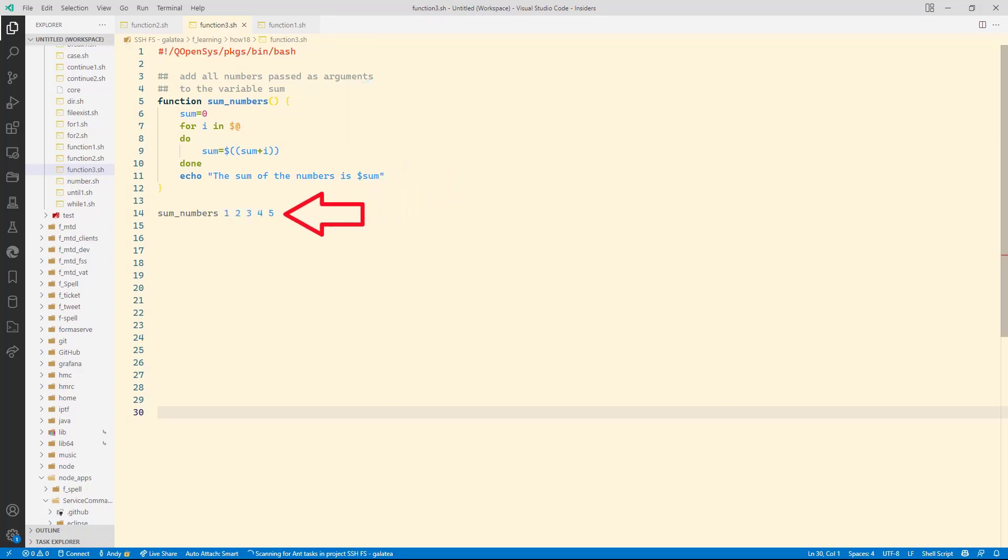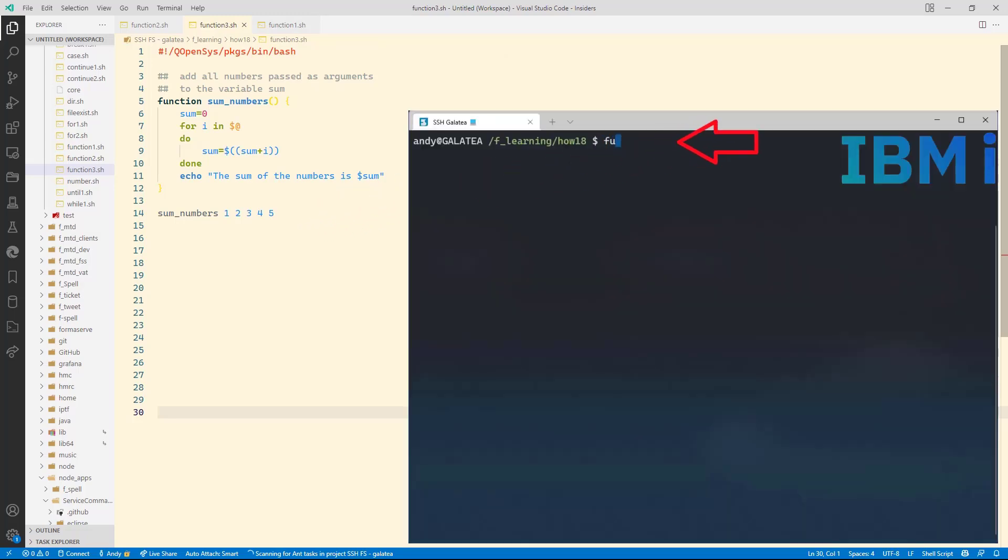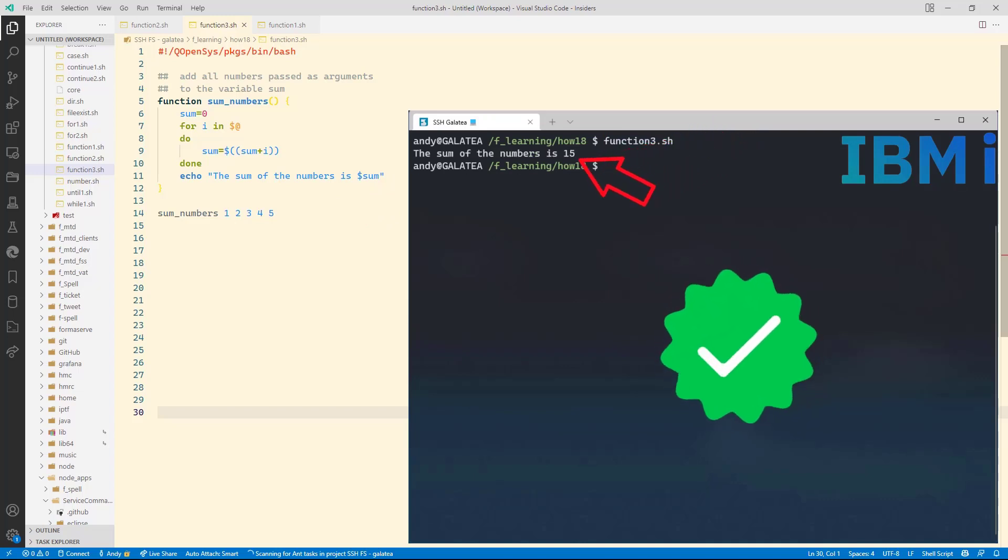Next we execute the function passing five values to it. Let me give this a test. Function three dot sh. And there we have it. It's summed up all the variables to 15. Great result. That's given you a couple of examples of functions and how to use them.